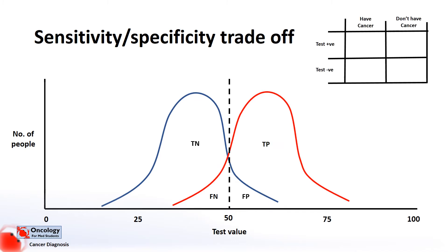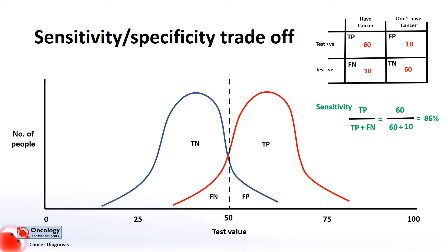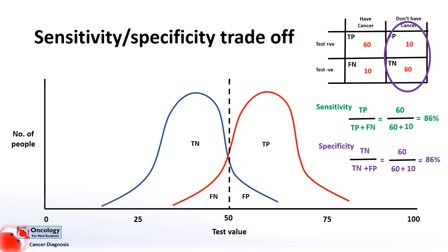If we plug in some numbers to represent the graph, we can work out the sensitivity and specificity — both work out here to be 86%. As I've said, the cutoff value is something that we have to decide on, and whether we increase it or decrease it will have an impact on both the sensitivity and specificity of the test.